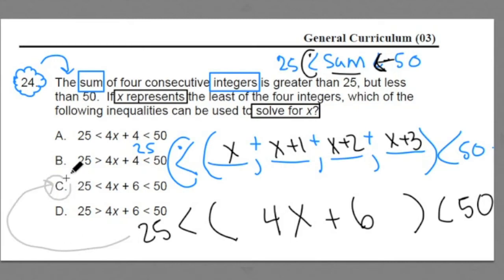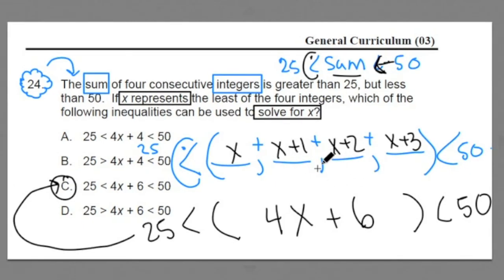So this is a great problem. It mixes in number sense - that's the integer stuff, the four consecutive integers, the sum of those numbers, the greater than or less than symbols - with algebra, representing those numbers in terms of x, combining those algebraic expressions, and turning it into an algebraic inequality.